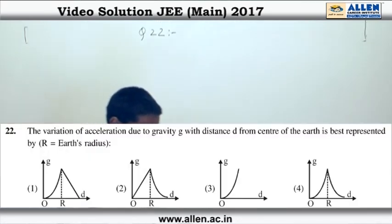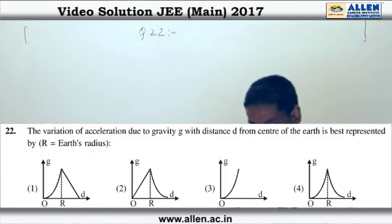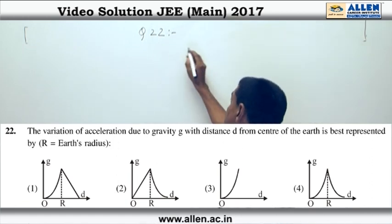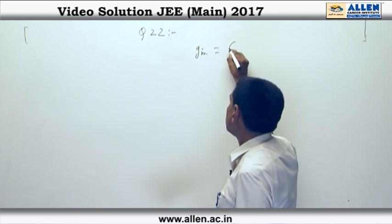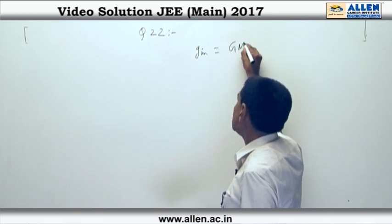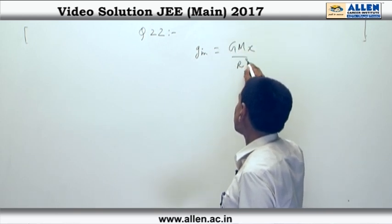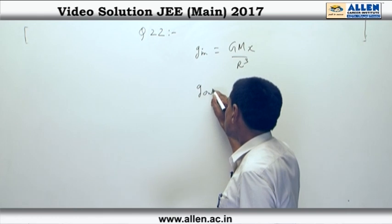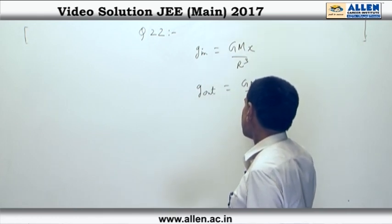Question 22: they have asked the variation of acceleration g with the distance d from the center of earth. Now, g inside the earth follows the formula gMx/R³, and g outside is GM/x².